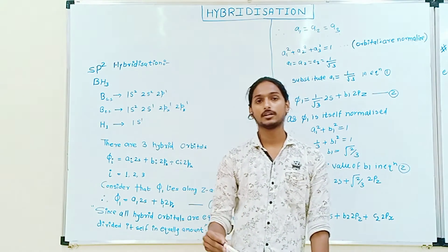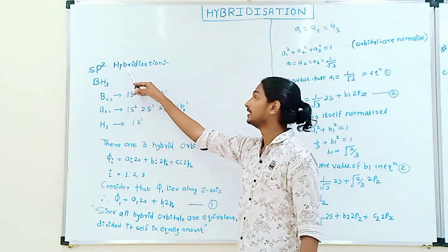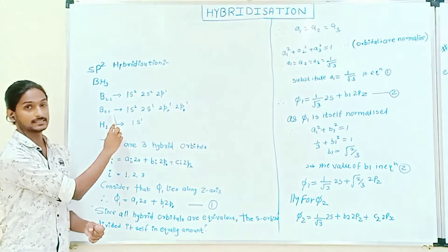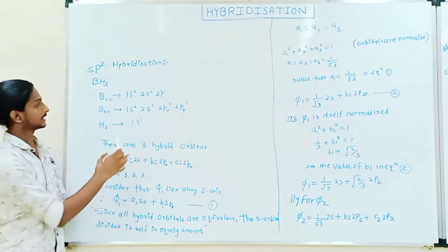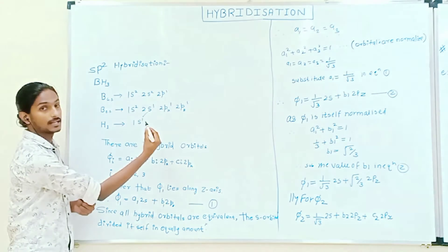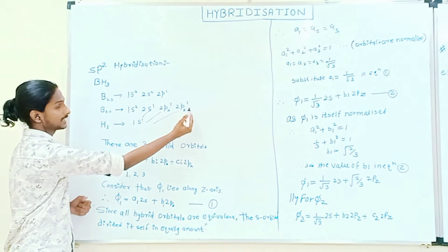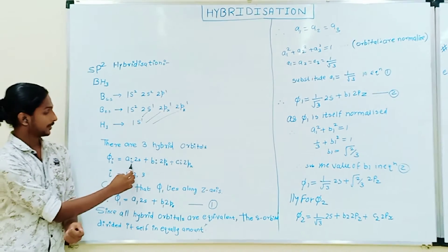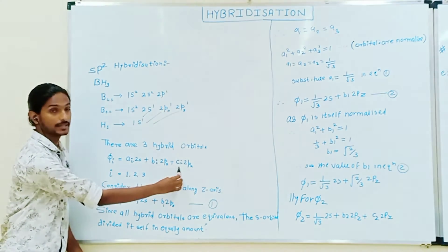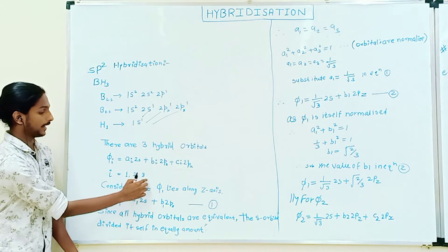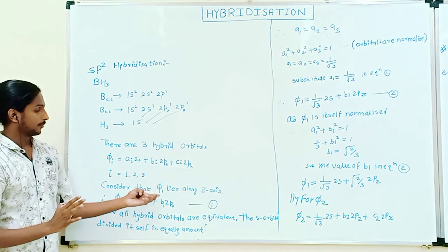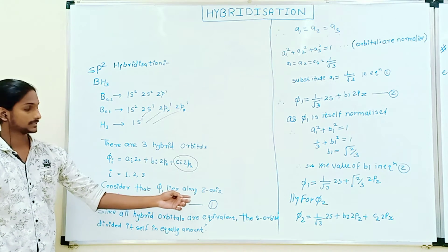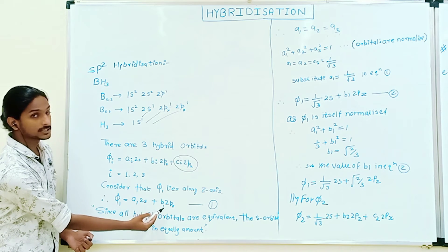Myself George Devasya and I am going to continue the explanation with respect to SP2 hybridization. I will be taking the example of BF3 molecule. Boron in the ground state and in the excited state — since there will be three hydrogen atoms, it will combine with S, Px, and Pz, giving SP2 hybridization. There will be three hybrid orbitals: phi1 = A1·2s + B1·2pz + C1·2px. Considering phi1 which lies along the z-axis, we can neglect the C1·2px term, giving phi1 = A1·2s + B1·2pz.